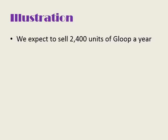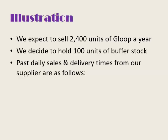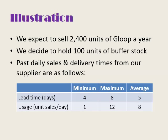Let's look at an illustration. We expect to sell 2,400 units of a product called Gloop per year, and we've decided to hold 100 units of Gloop as buffer stock. Analysing past daily sales and supplier delivery times, we find a lead time minimum of 4 days, a maximum of 8 days, and an average of 5 days. So the maximum number of days it takes our supplier to deliver goods to us is 8 days.